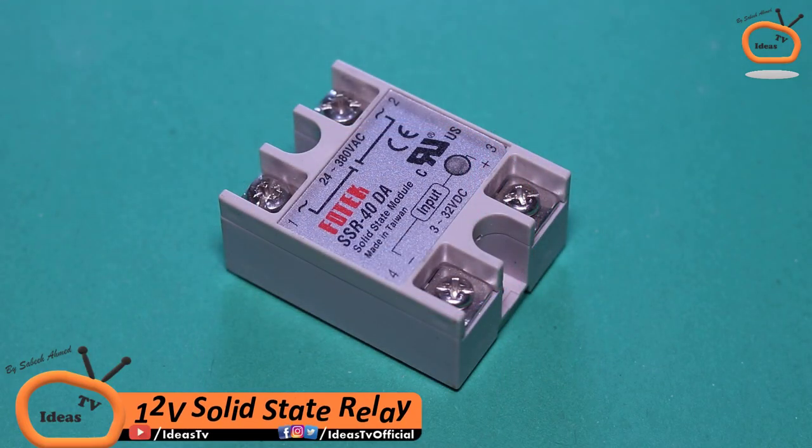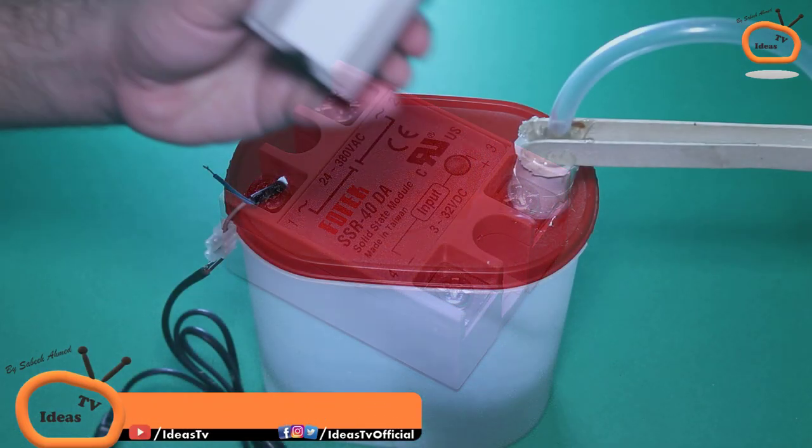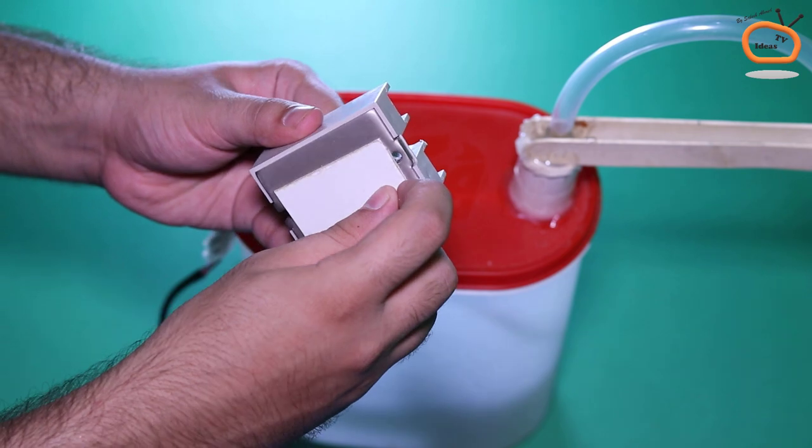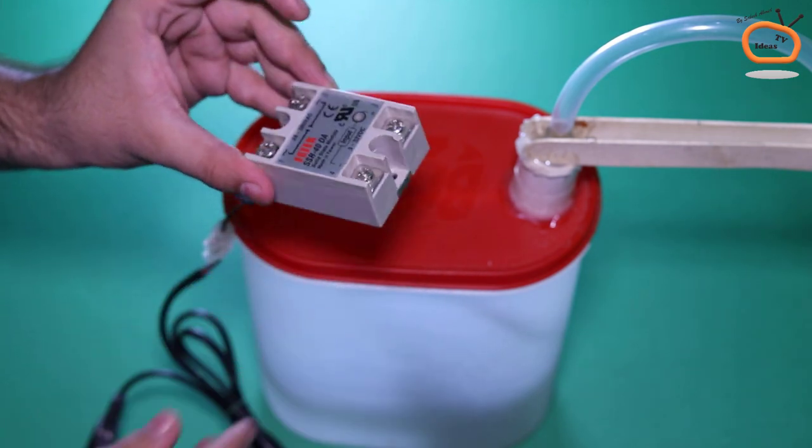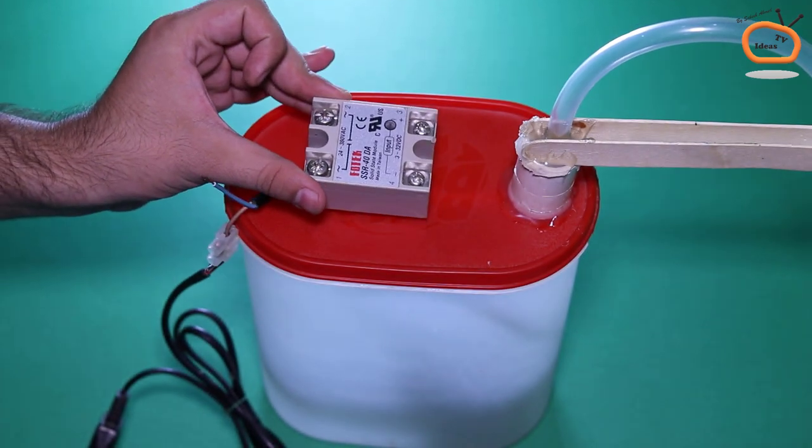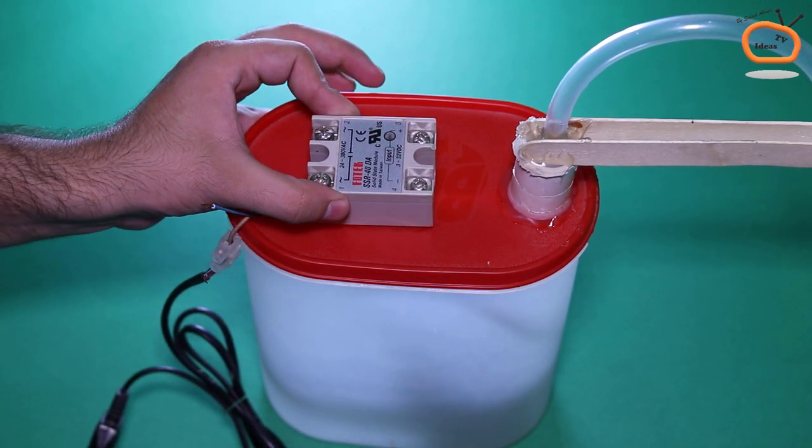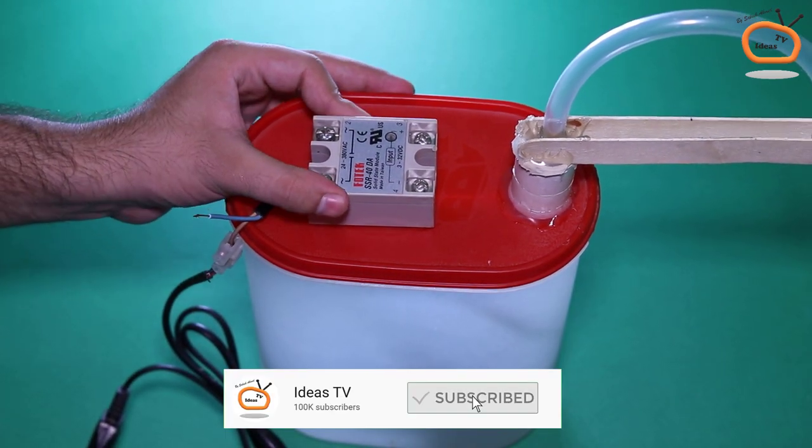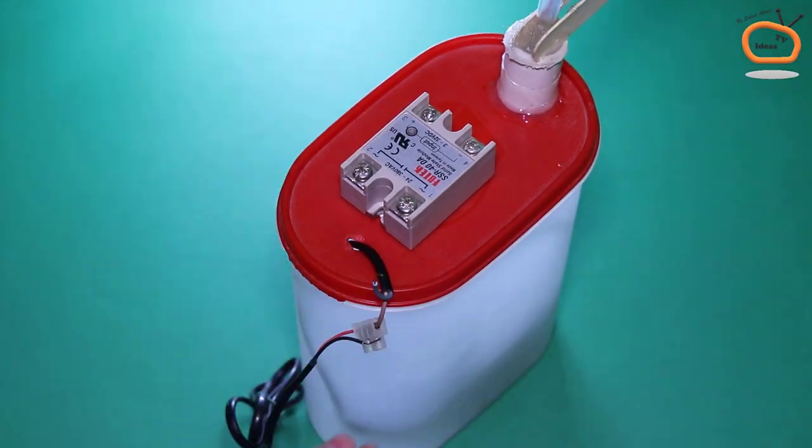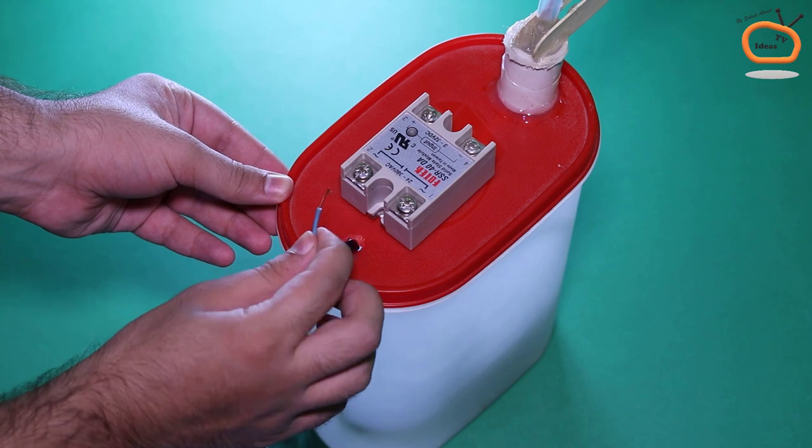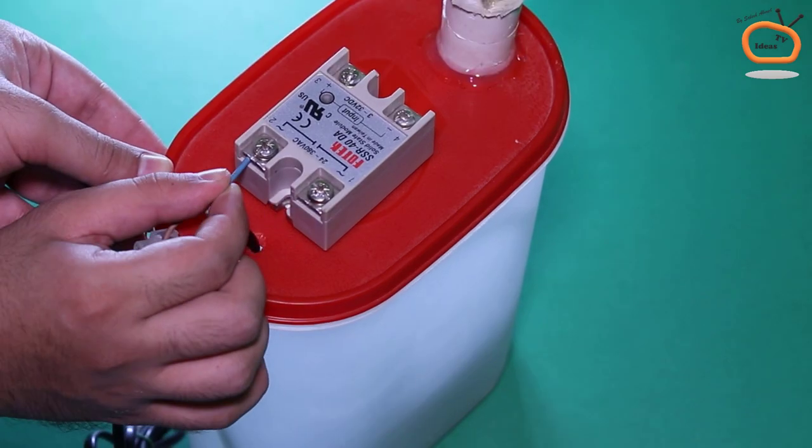Here you will need a solid state relay. Place it on container with the help of double sided tape and connect the remaining wire from pump and power cord to the relay.